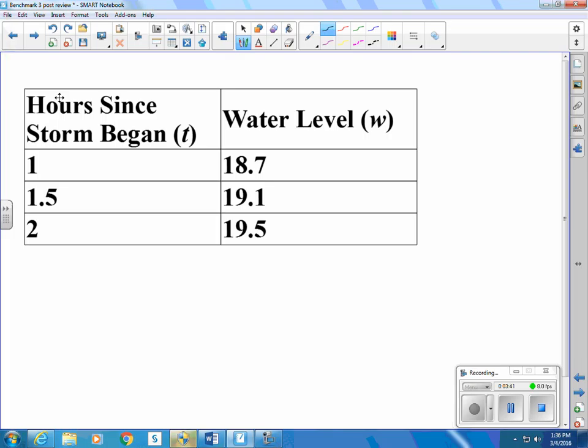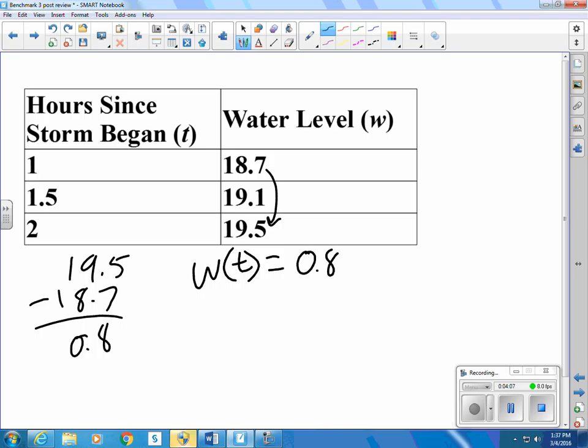So if we have a table and they tell us it's a linear equation, we can look for the increase in an hour. The increase in an hour would be that right there. So let's take our 19.5 and subtract our 18.7, and that gives us 0.8. So I know that my water level as a function of time is going to be equal to 0.8 t plus some starting value.